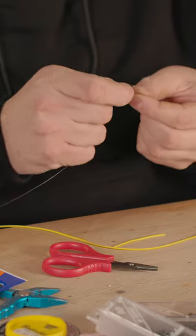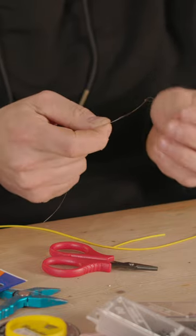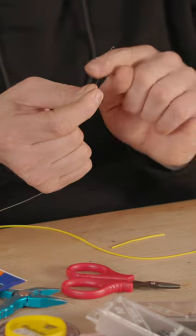So just do that again. Tie a smaller loop. So you're left with a little tag. So you've got a little loop and a big loop.